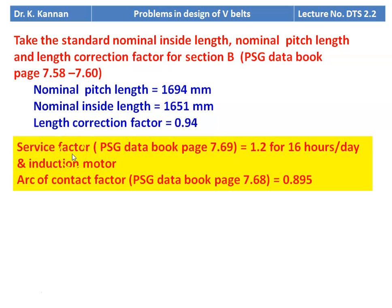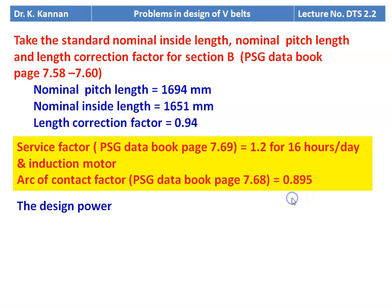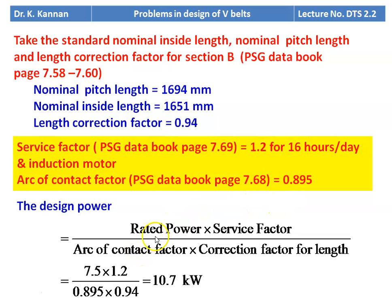Service factor is 1.2 for 16 hours per day with an induction motor driving a fan, from page 7.69. Arc of contact factor from page 7.68 is 0.895 for 140 degrees. Design power = rated power × service factor / (arc of contact factor × length correction factor) = 7.5 × 1.2 / (0.895 × 0.94) = 10.7 kW.